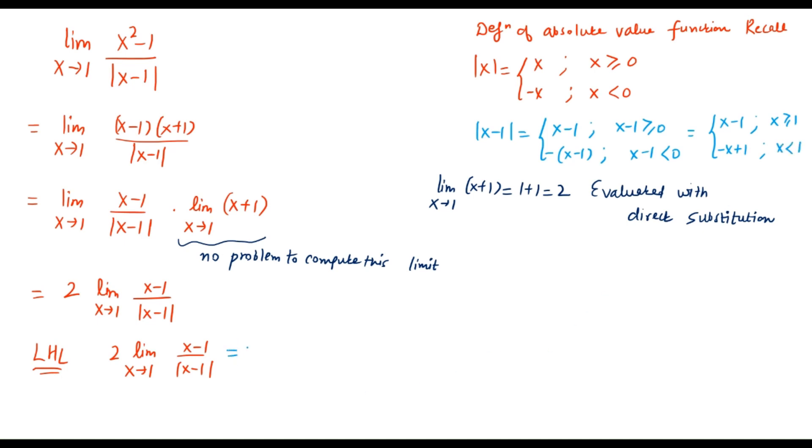So now when you are computing the left hand limit, that means you are approaching 1 from the left, so that means x is less than 1 in its magnitude. So I will be replacing mod of (x minus 1) with minus of (x plus 1).